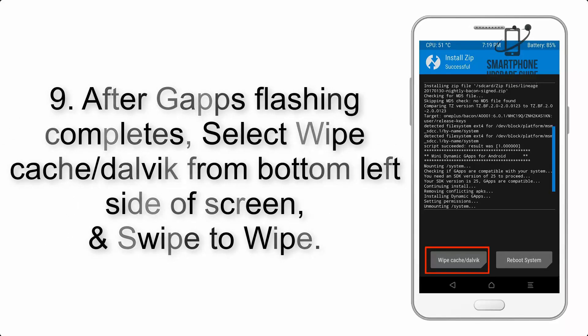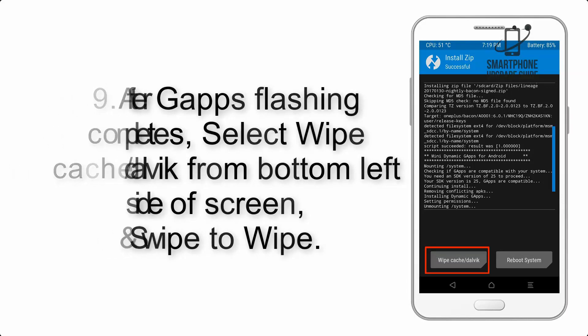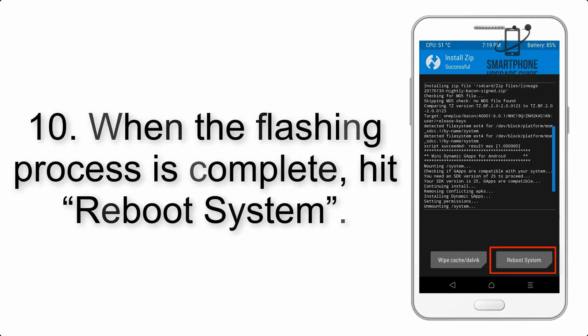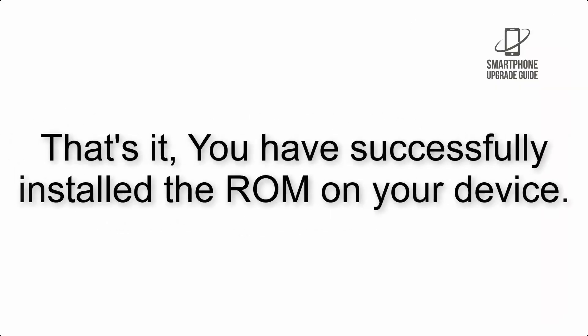Step 8: Flash the GApps zip package in the same manner. Step 9: After GApps flashing completes, select Wipe Cache and Dalvik from the bottom left side of the screen and swipe to wipe. Step 10: When the flashing process is complete, hit Reboot System. That's it — you have successfully installed the ROM on your device.